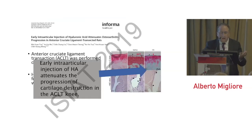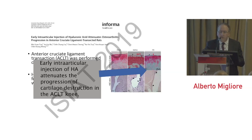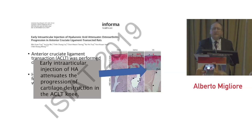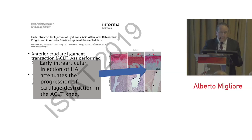Another study in rats showed the same message — that we have to use this kind of treatment, in this case hyaluronic acid, in the progression of cartilage very quickly after trauma.